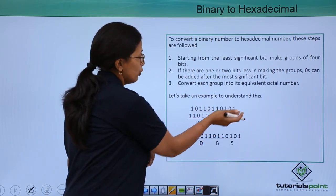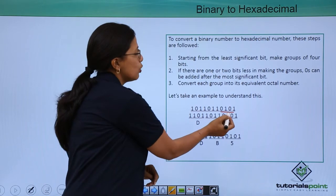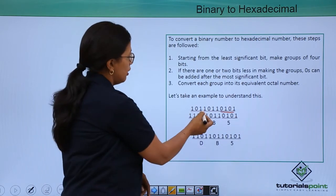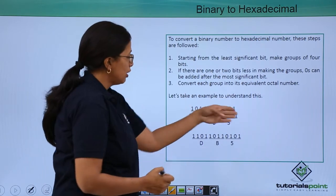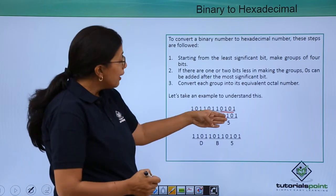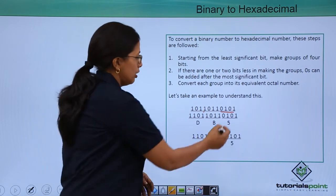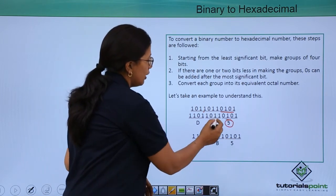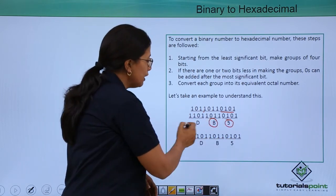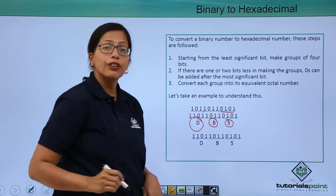Starting from the right, I have 1010, then 1011. I have got 3 groups. Now, I will convert each group into its equivalent hexadecimal number. Here, it comes to 5. Here, it is coming to B and here, it is coming to D.